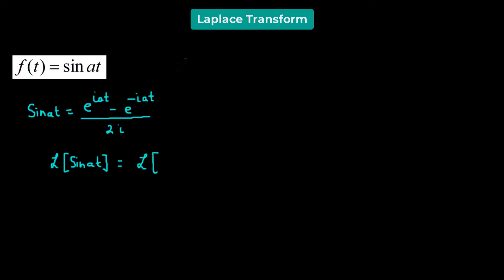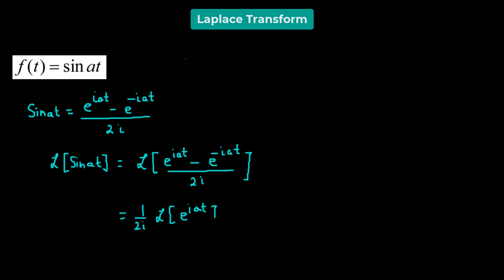So finding the Laplace transform of sine of at is equivalent to finding the Laplace transform of e raised to the power of i·at minus e raised to the power of negative i·at, all divided by 2i. Now we are going to use the property of linearity of the Laplace transform. So we have 1 over 2i times the Laplace transform of e raised to the power of i·at, minus 1 over 2i times the Laplace transform of e raised to the power of negative i·at.